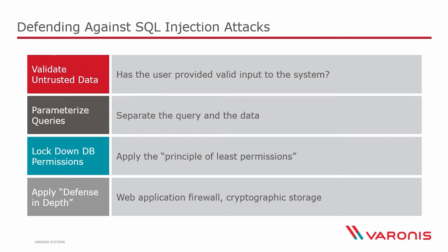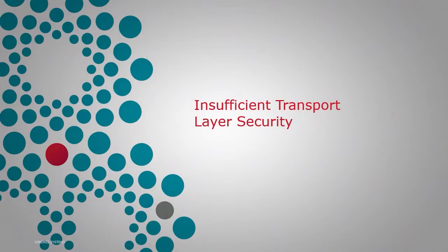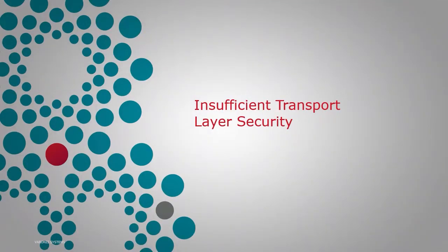That's SQL injection. Next up we're going to look at insufficient transport layer security — really talking about a lack of encryption on the network layer. Particularly when communicating over the web, this means missing HTTPS, or applications talking over the insecure HTTP scheme. It's not just that — there are also questions of whether it's good HTTPS or possibly weak HTTPS. Let's jump in and have a look at how this risk can manifest itself.